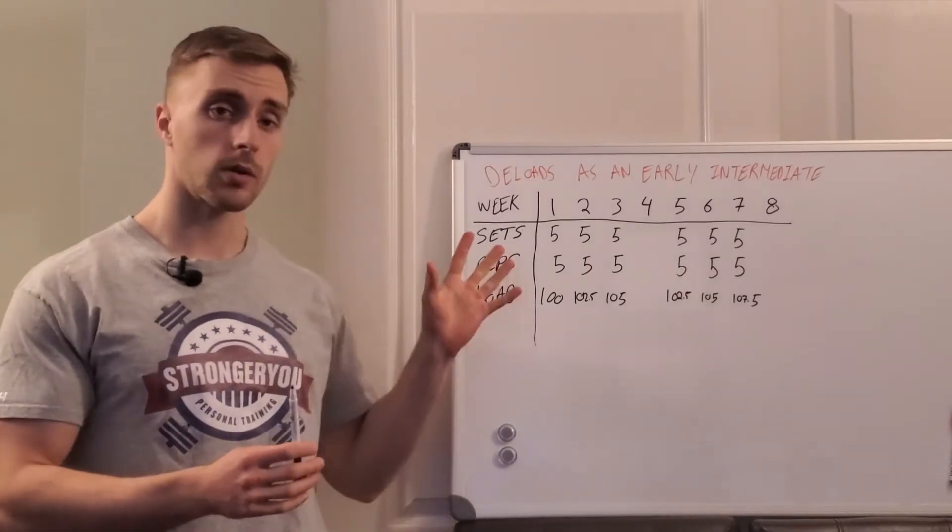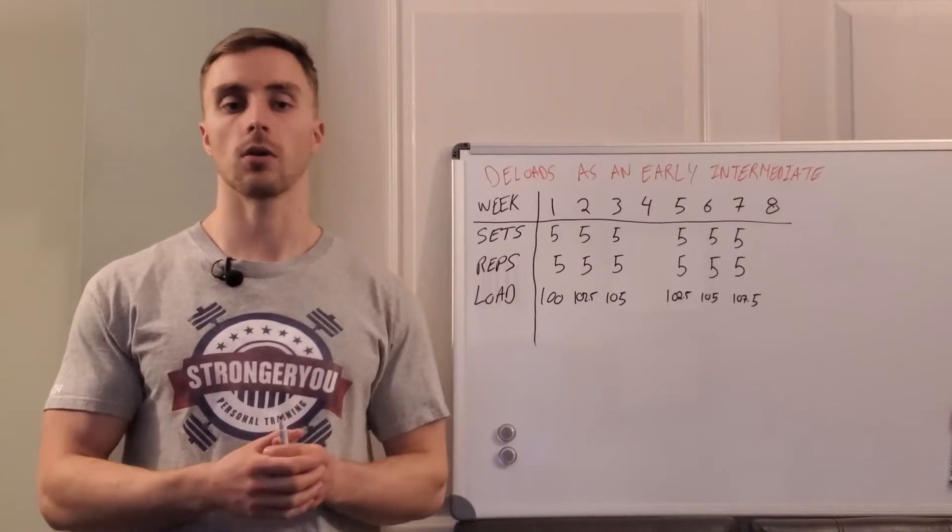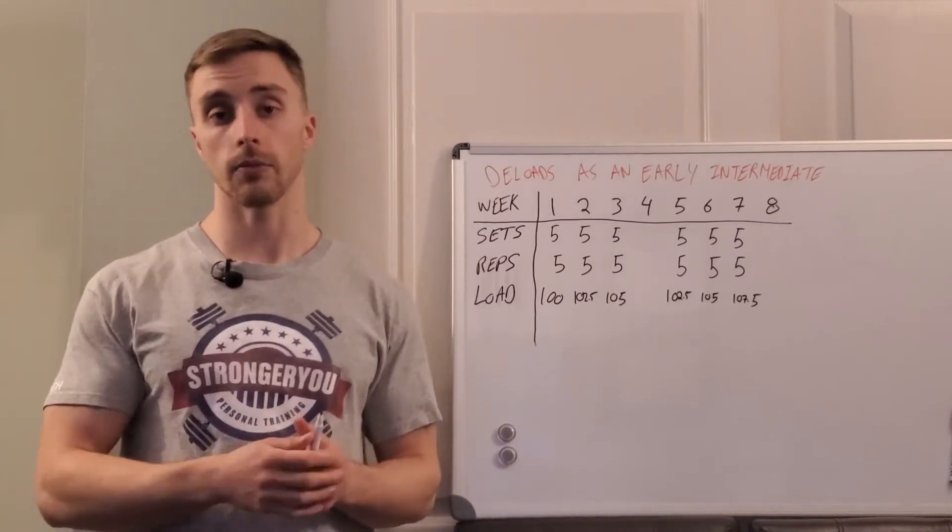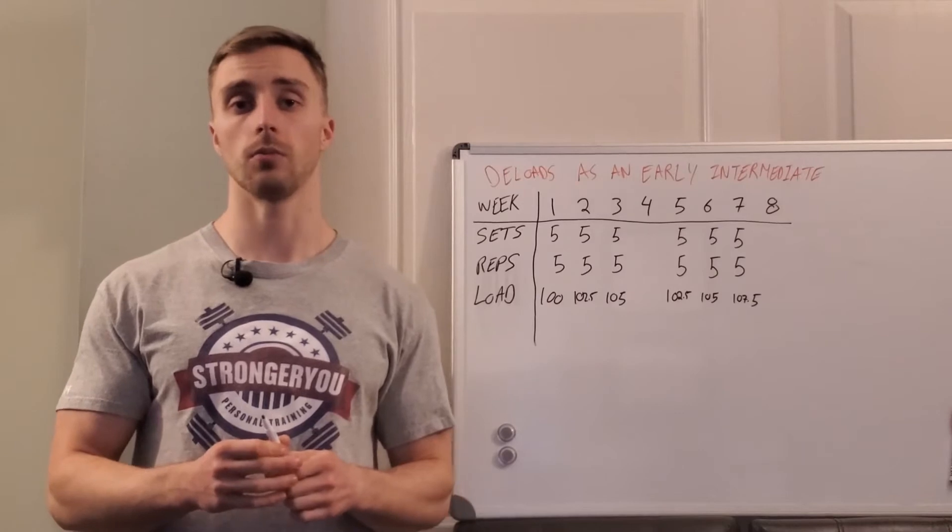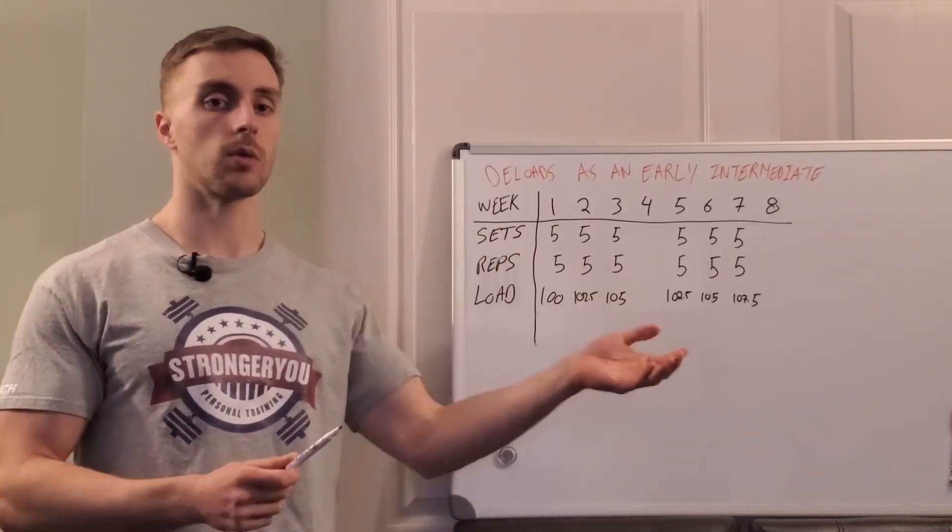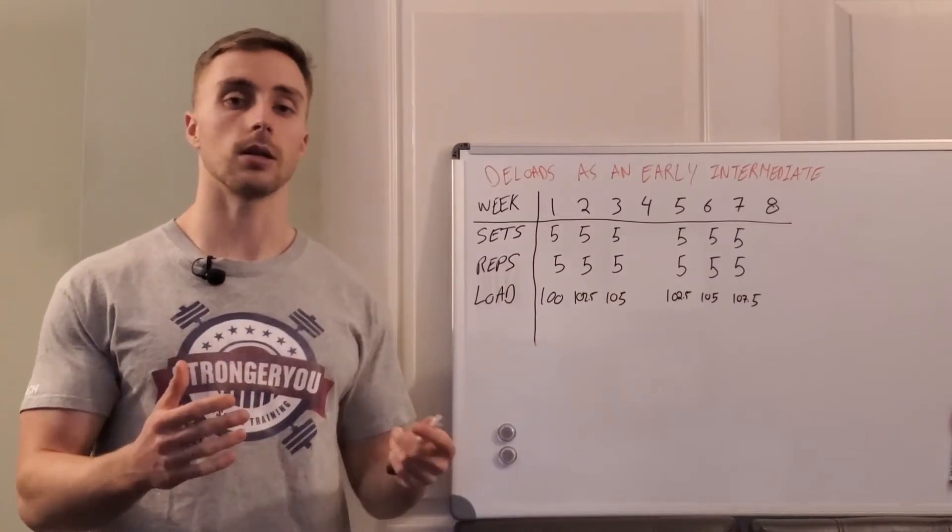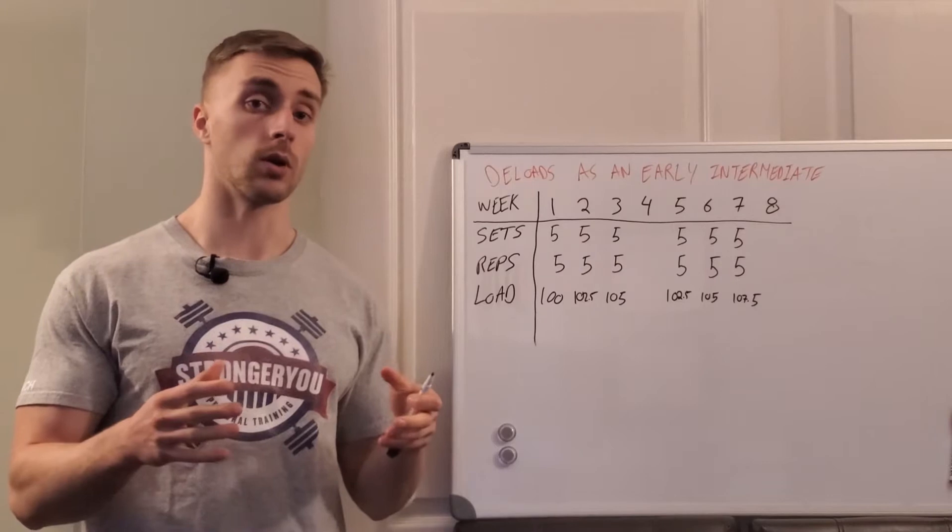So next piece we're going through today is how to deload as an early intermediate. Now traditionally a lot of the programs we've talked about so far, including the plus four minus one and plus four minus two program, have both gone through this very steady set and rep scheme and our only variation in the program has really come from periodizing our load that we're using on the bar.